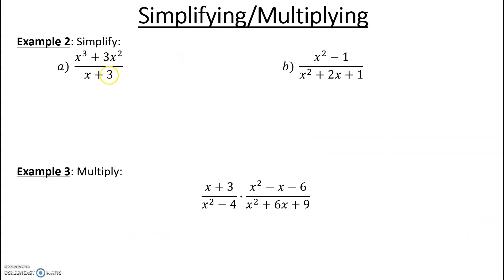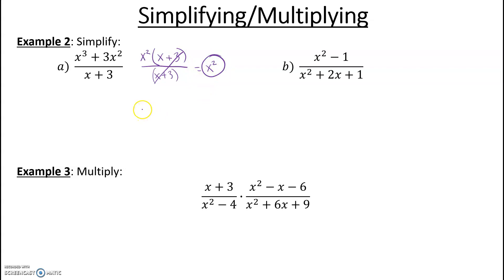For simplifying, you want to make sure you are factored. Here I see a GCF of X squared — I'm going to go ahead and factor that out. If you factor out an X squared, you're left with X plus three in the numerator. And in the bottom you have X plus three. So we can cancel those out and we get X squared. We know X plus three cannot equal zero, so X cannot equal negative three — that's your restriction on your domain.